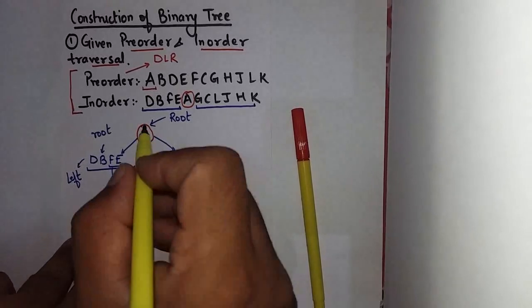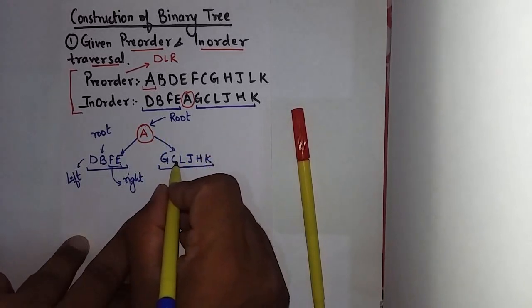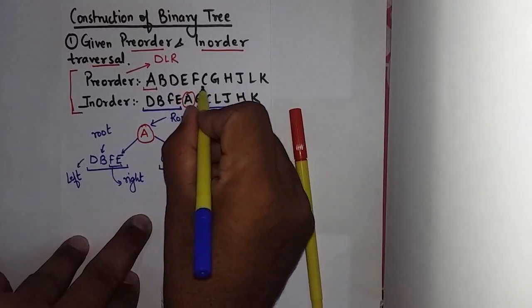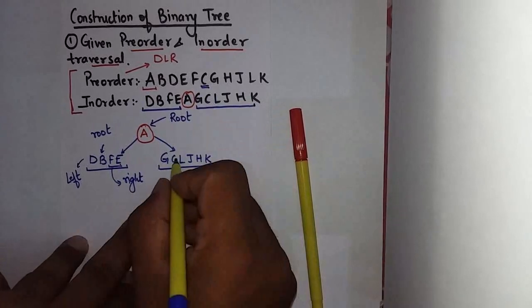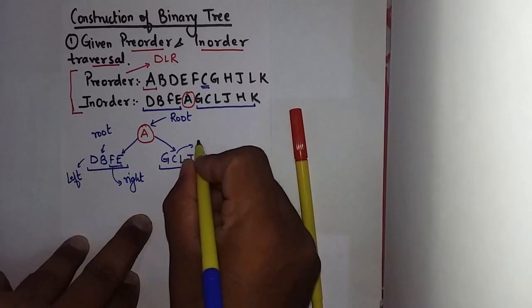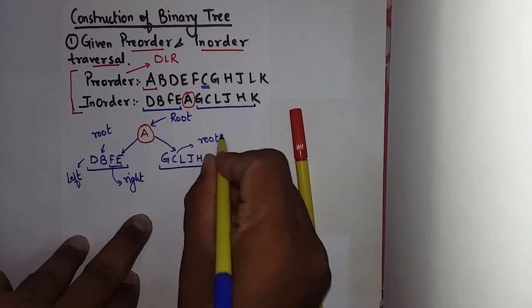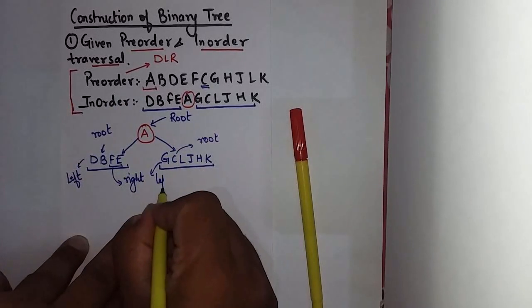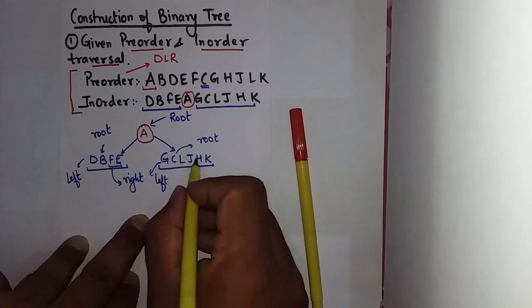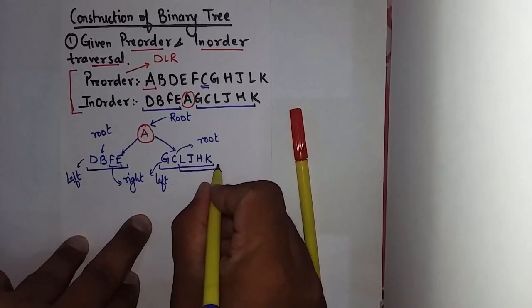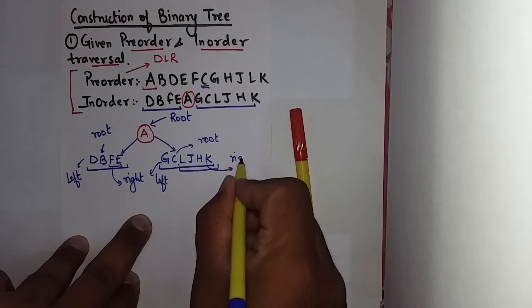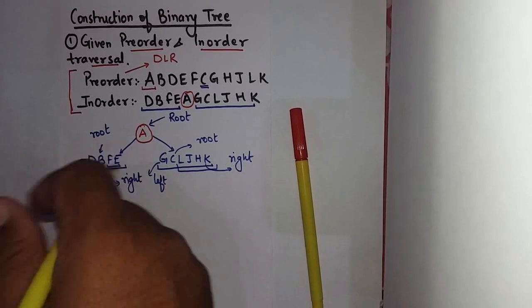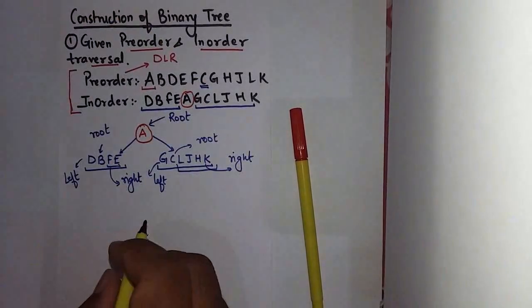Similarly, if I check this. Out of G, C, L, J, H, K, which occurs first? C. So C will become root. And now check here. Left of C is G. So G is left subtree and L, J, H, K are part of right subtree. So by following this entire process recursively, if I draw a complete tree...